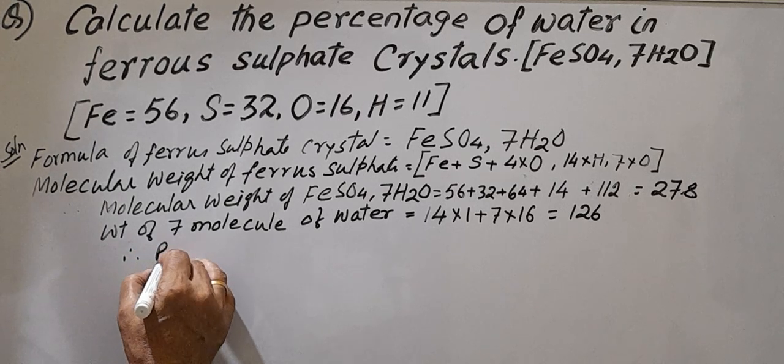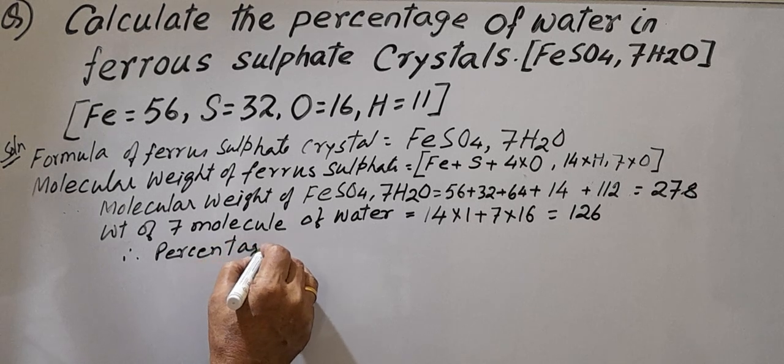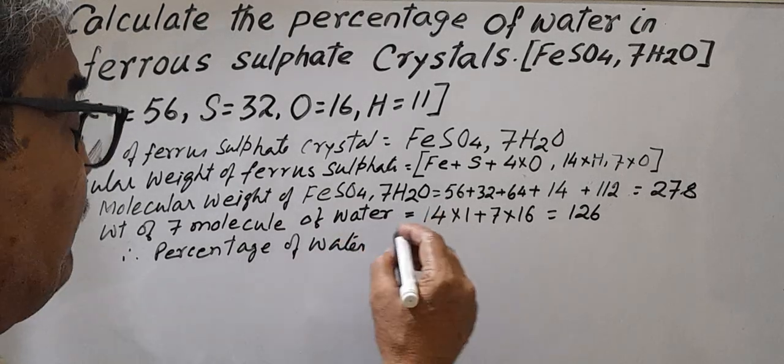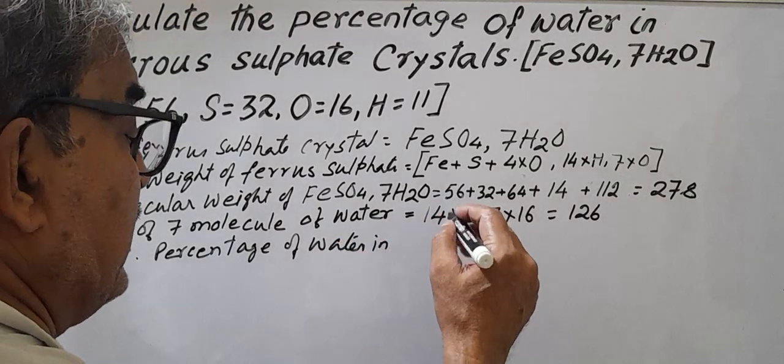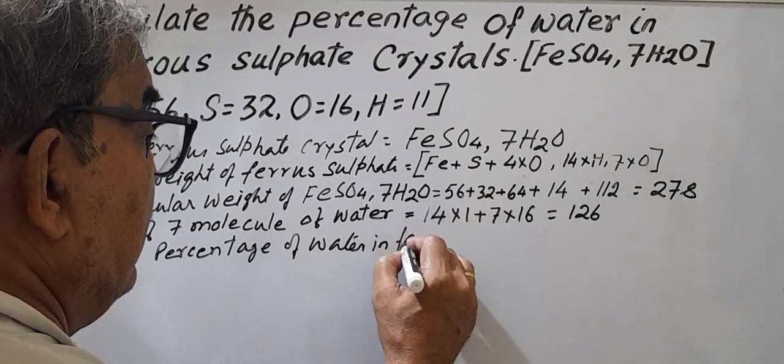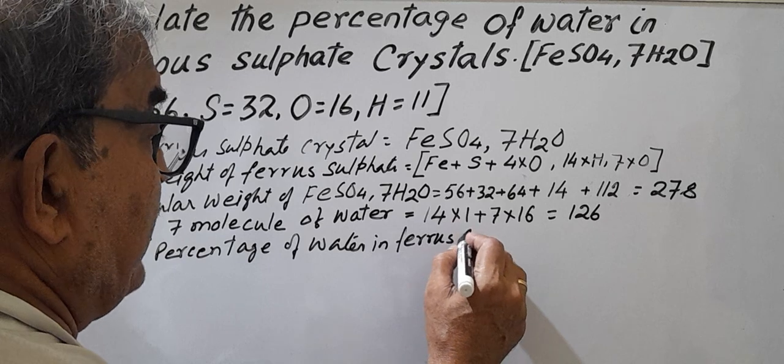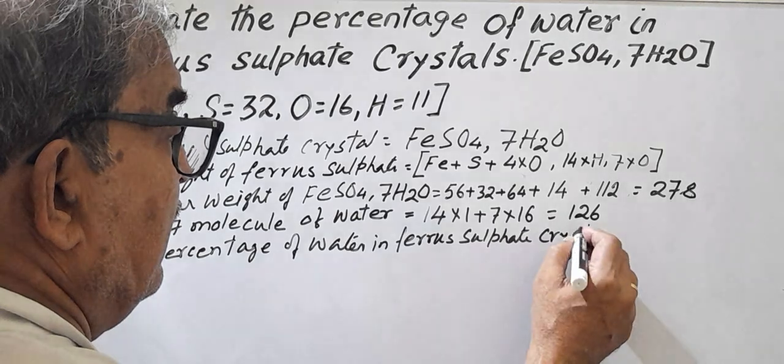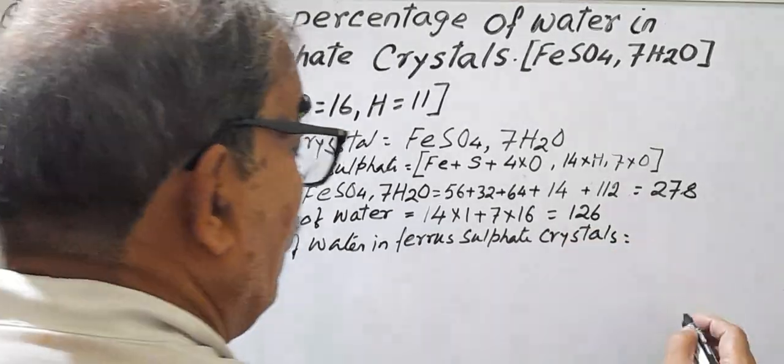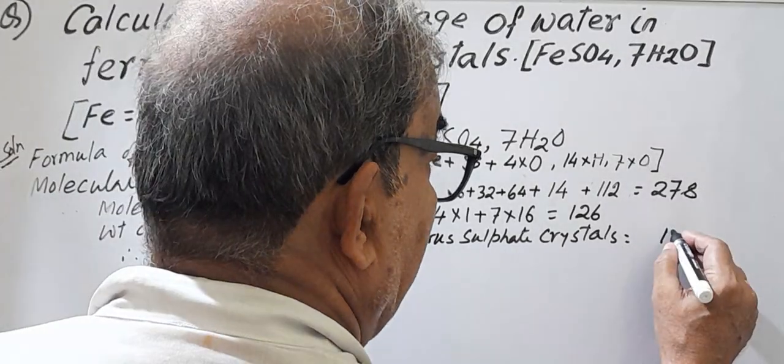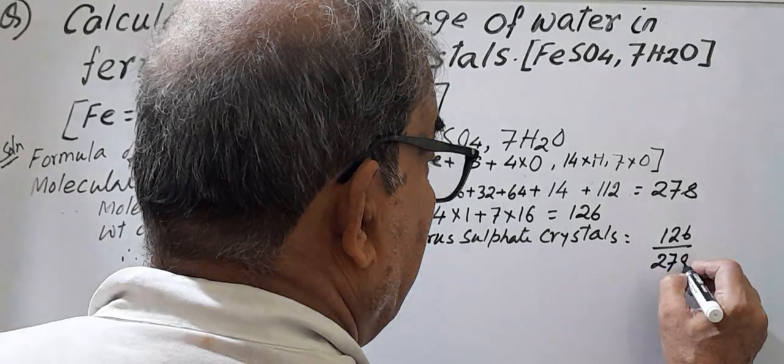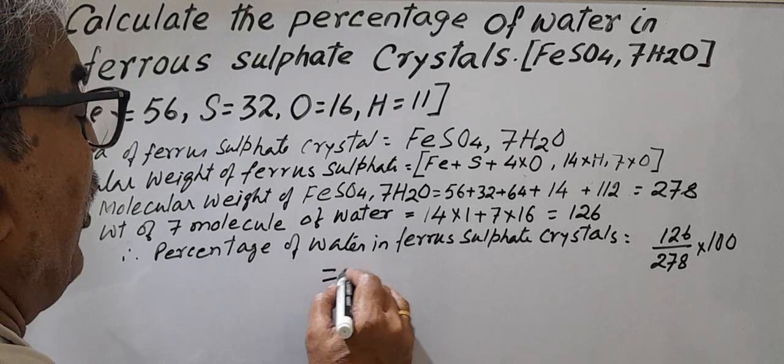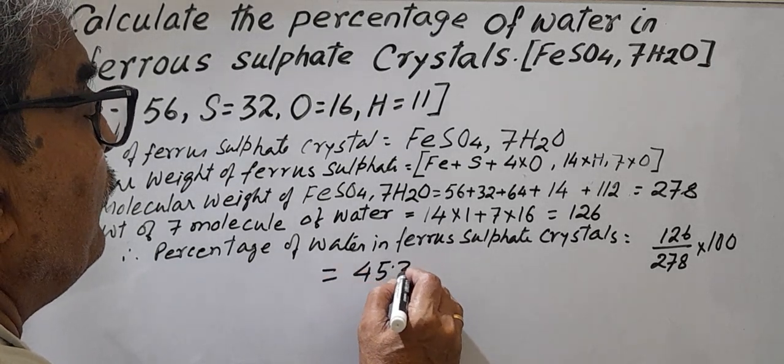Now see, 126 out of 278, and that is 100. Therefore percentage of water in ferrous sulfate crystals equal to 126 by 278, 126 by 278 into 100, that means that is 45.32 percent.